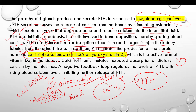PTH also stimulates the production of 1,25-dihydroxyvitamin D3 — calcitriol — the active form of vitamin D3. This calcitriol then stimulates increased absorption of dietary calcium by the intestine.